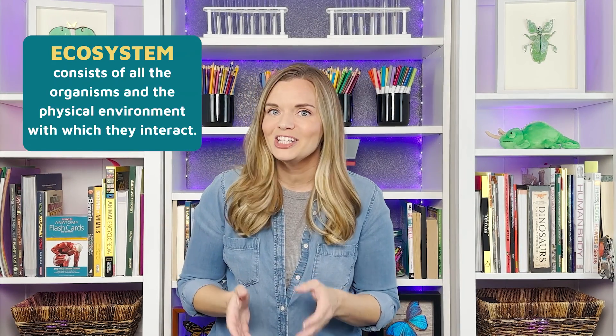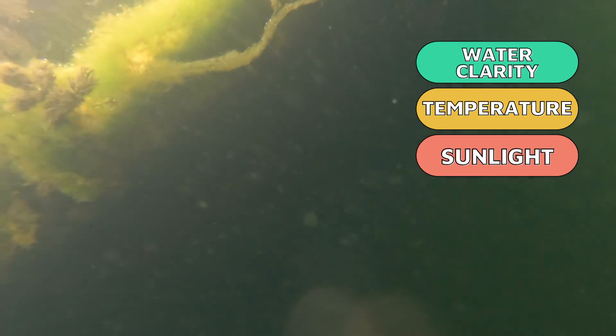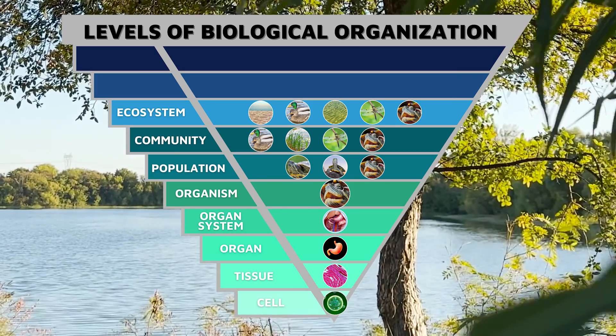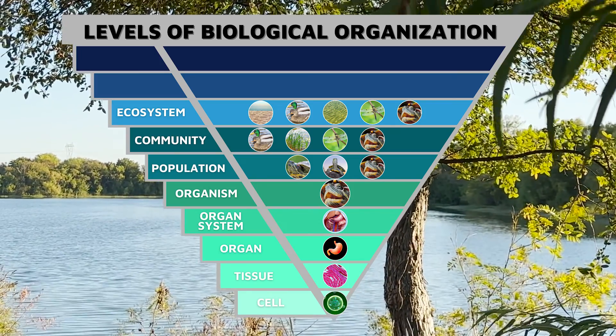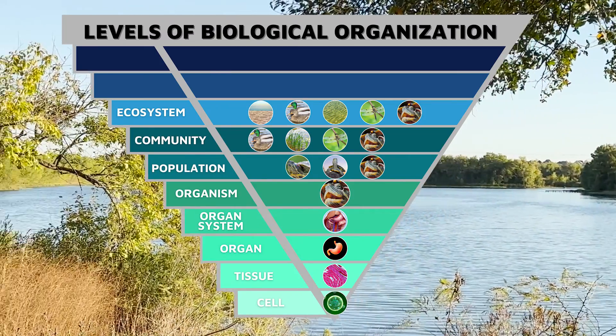The interactions between those communities and the physical landscape make up ecosystems — our next layer. Think about all the birds and other animals that visit nearby ponds and all the abiotic, non-living elements like water clarity, temperature, amount of sunlight, and rainfall. The surrounding area and the abiotic factors together form the turtle's ecosystem.